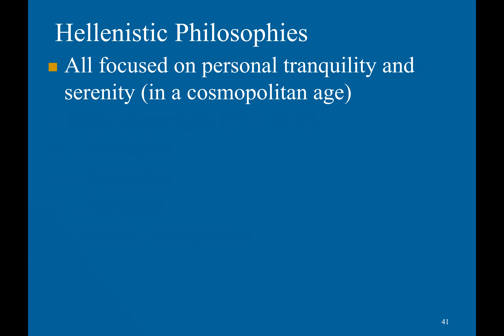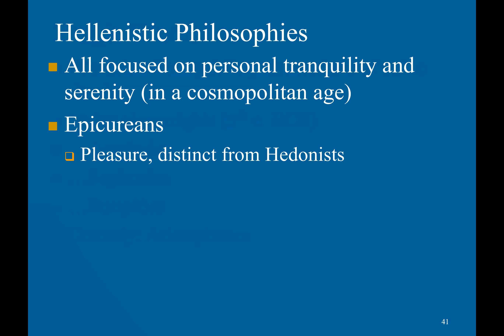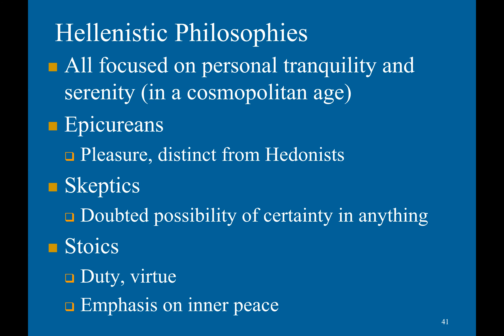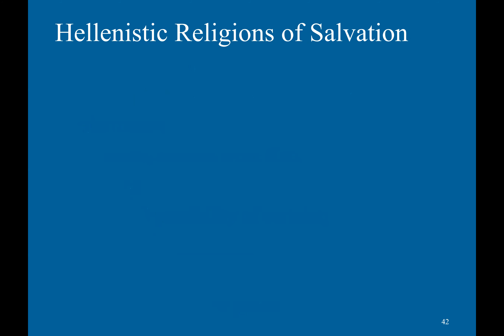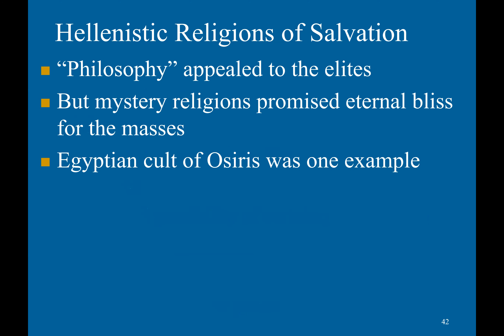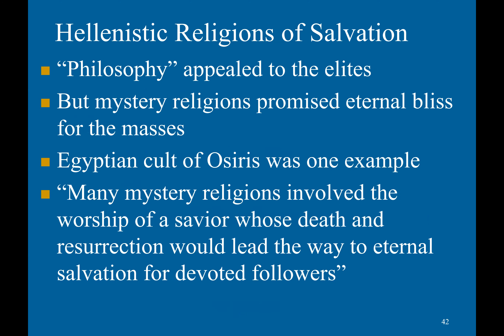Hellenistic philosophy focused on personal tranquility and serenity in a cosmopolitan age. Three major schools of thought were the Epicureans, who focused on pleasure — distinct from hedonism — the Skeptics, who doubted the possibility of certainty in everything, and the Stoics, who emphasized duty, virtue, and inner peace. Philosophy appealed to the elites, while mystery religions promoted eternal bliss for the masses — for example, the cult of Osiris. As a famous quote explains: many mystery religions involve the worship of a savior whose death and resurrection would lead the way to eternal salvation for devoted followers.